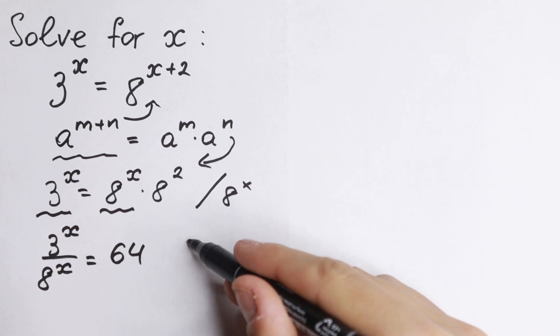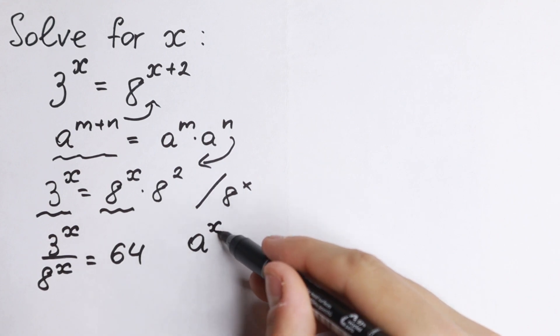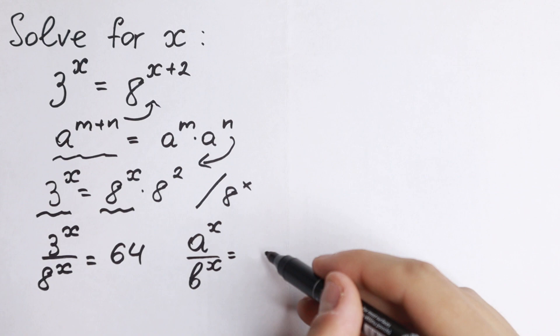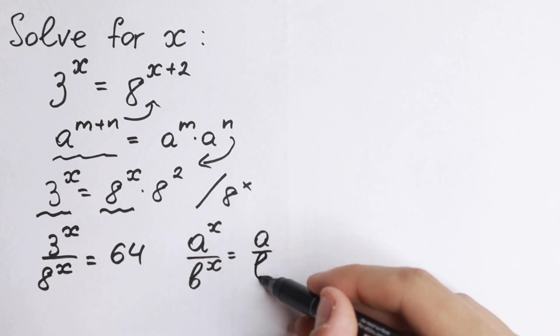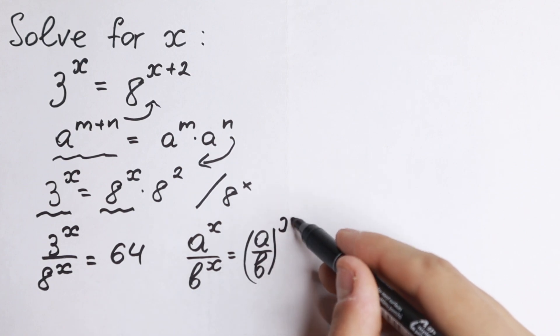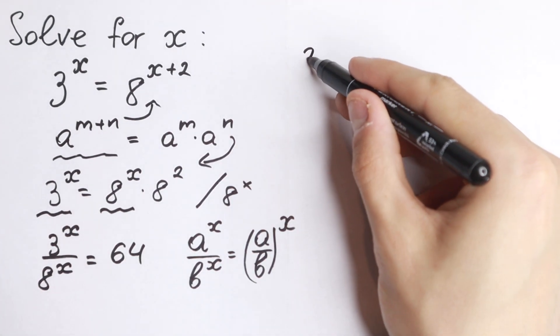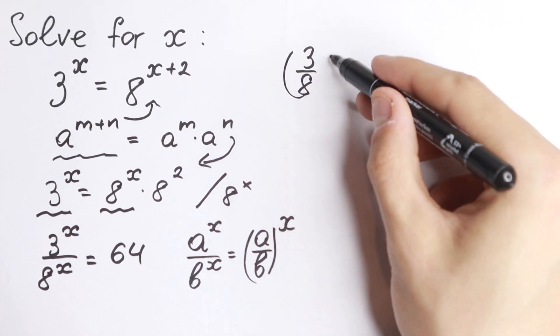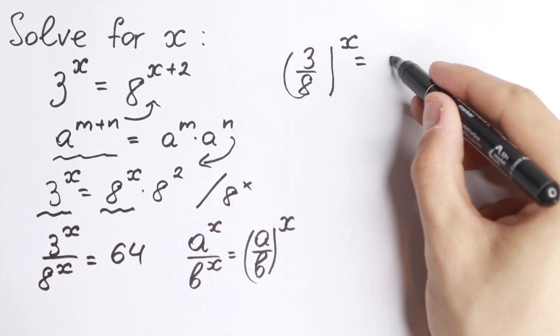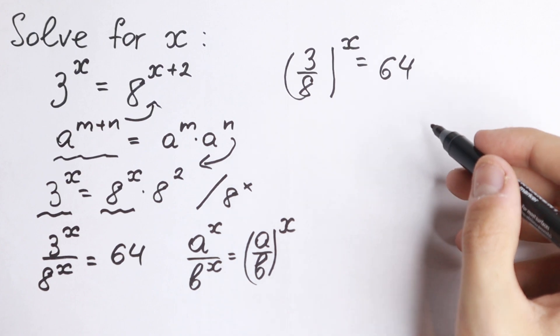What are we going to do next? We need to know another good rule. If we have a^x over b^x, it will be equal to (a/b)^x. So let's use this rule because we have different numbers with the same power. We can easily write it as (3/8)^x = 64. How can you solve it?